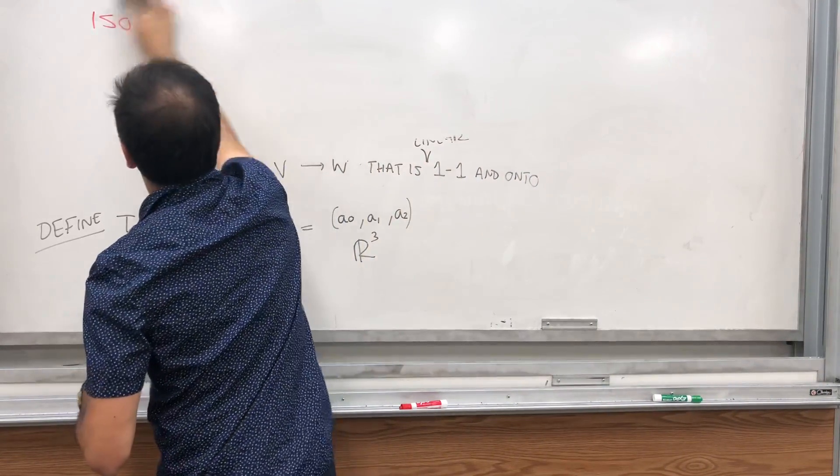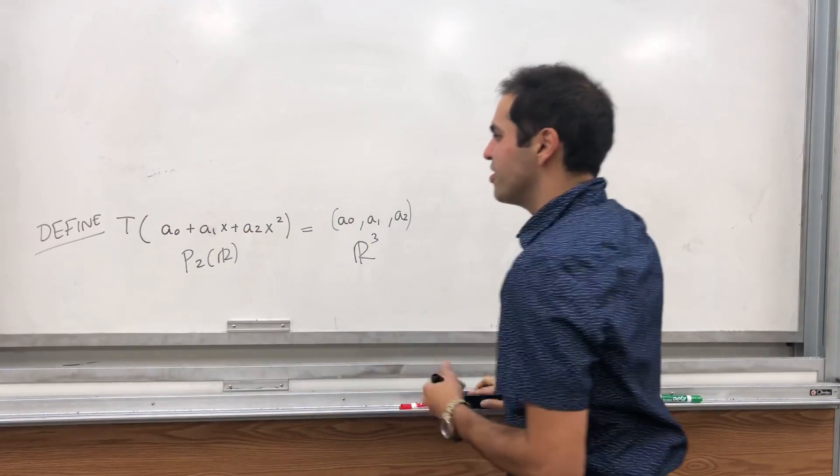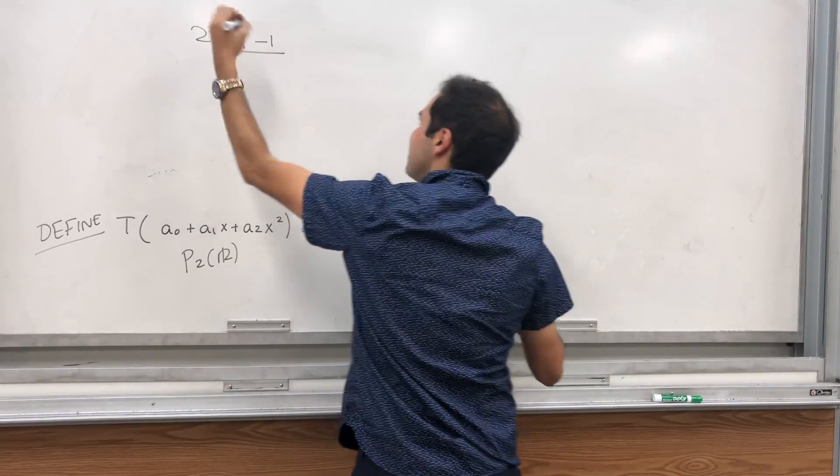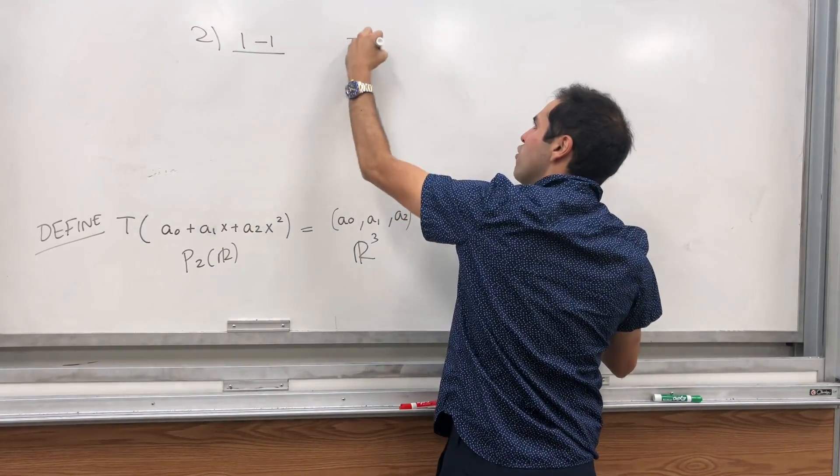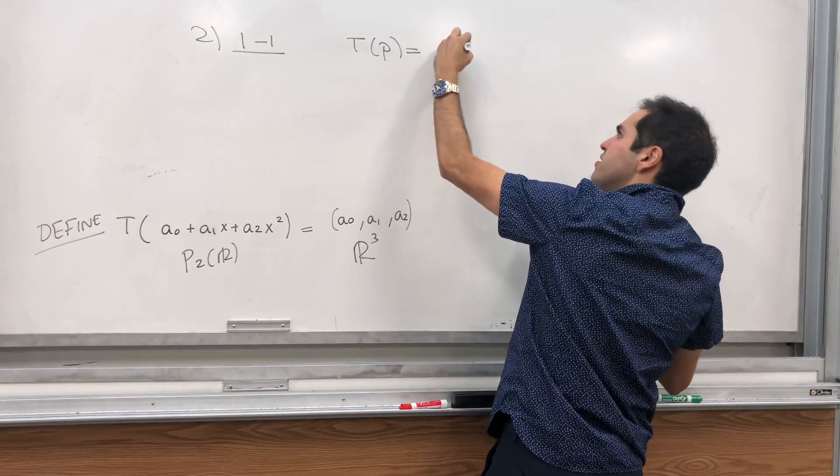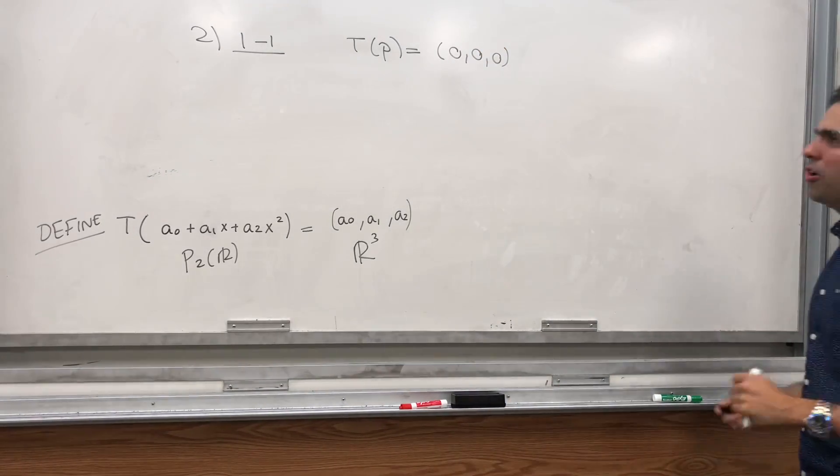One-to-one is very easy to show. So because remember, this is the definition, right? So one-to-one means suppose T of P equals the 0 vector, which here is (0, 0, 0), and show that P is the 0 polynomial.